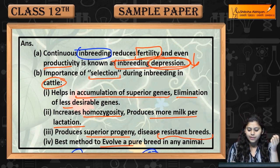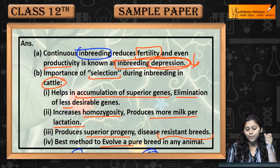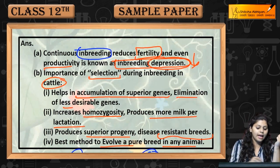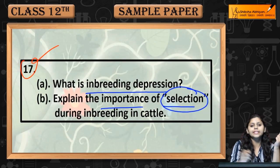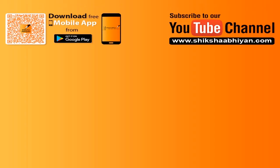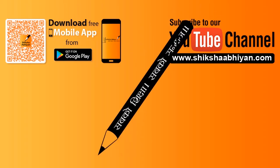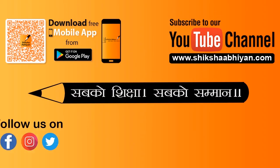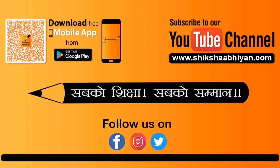The best method is to evolve a pure breed in any animal. This was question number 17.